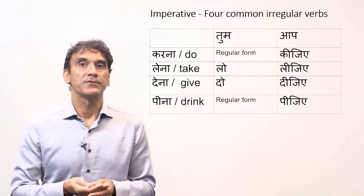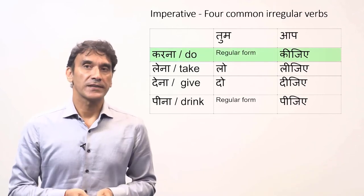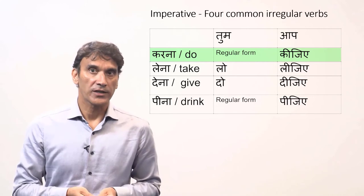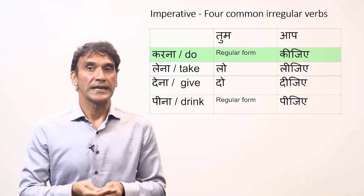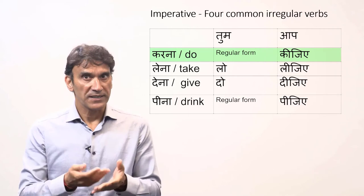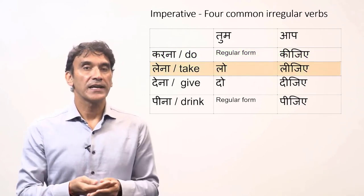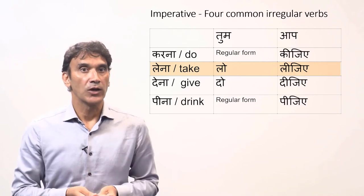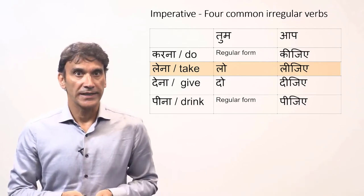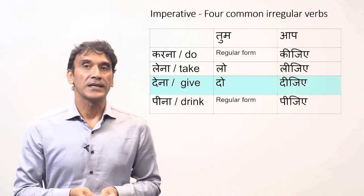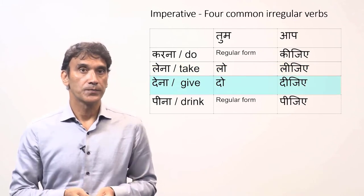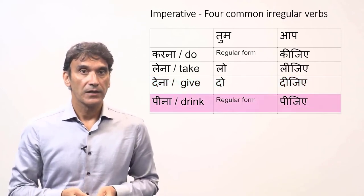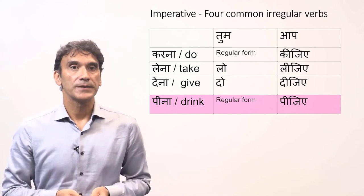A few verbs in Hindi have irregular imperative forms, and these verbs are quite common. First, 'karna' (to do): the 'aap' form is 'kijiye,' not 'kariye' — you may hear many people using 'kariye' but the standard form is 'kijiye.' For 'lena' (to take): the 'tum' form is 'lo,' not 'leo,' and the 'aap' form is 'lijiye,' not 'lehiye.' For 'deena' (to give): the 'tum' form is 'do,' not 'deo,' and the 'aap' form is 'dijiye,' not 'dehiye.' For 'peena' (to drink): the 'aap' form is 'pijiye.'